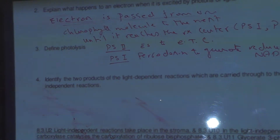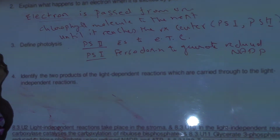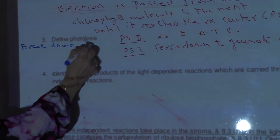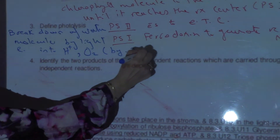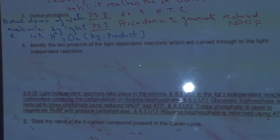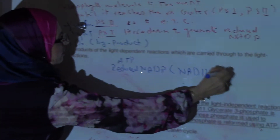Question 2: Define photolysis. Photolysis is the breakdown of a water molecule by light energy into hydrogen protons and oxygen, which is released as a byproduct. Identify two products of light-dependent reactions carried through to the light-independent reactions: ATP and reduced NADP (written as NADPH + H+).